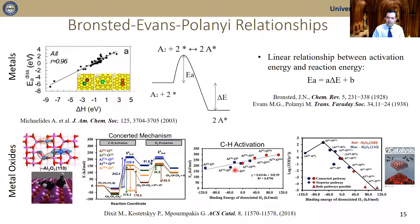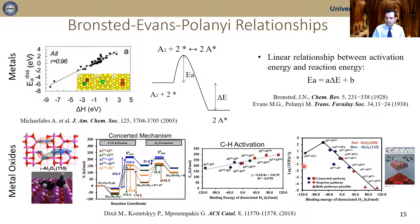We related the rate-limiting step activation energy with a single thermodynamic descriptor — the binding energy of dissociated hydrogen on pair sites on gamma-alumina — and you see a straight line. Through these relationships you can develop so-called volcano plots in catalysis, where you can estimate the total catalytic activity and turnover frequencies on your catalyst, and identify the most active site or catalyst at the top of the volcano plot.